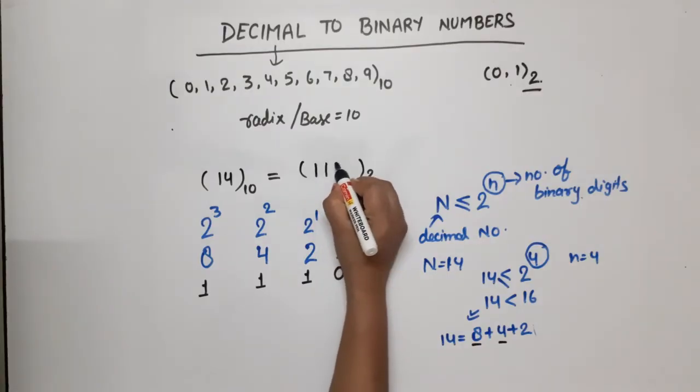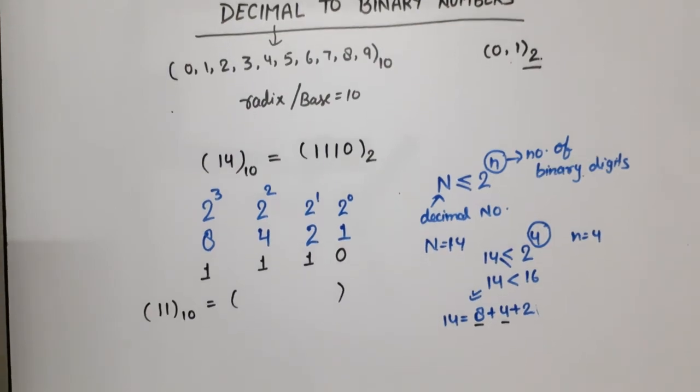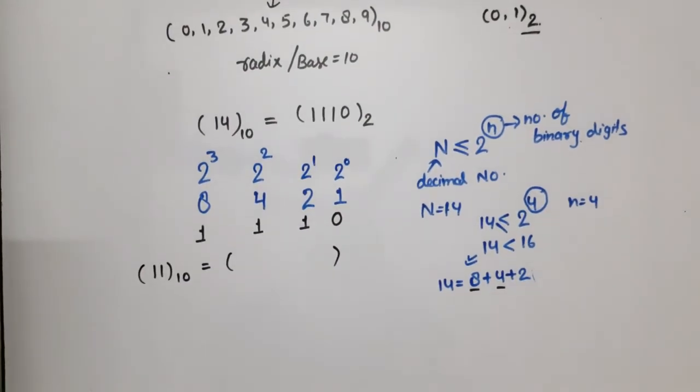One more example: suppose we have to convert 11 to binary. We have 8, 4, 2, 1. 11 can be written as 8 plus 2 plus 1. This means 8's position is high, 4 is not available so 4's position is 0, 2 is available so 1, and 1 is available so 1. This is the binary conversion.